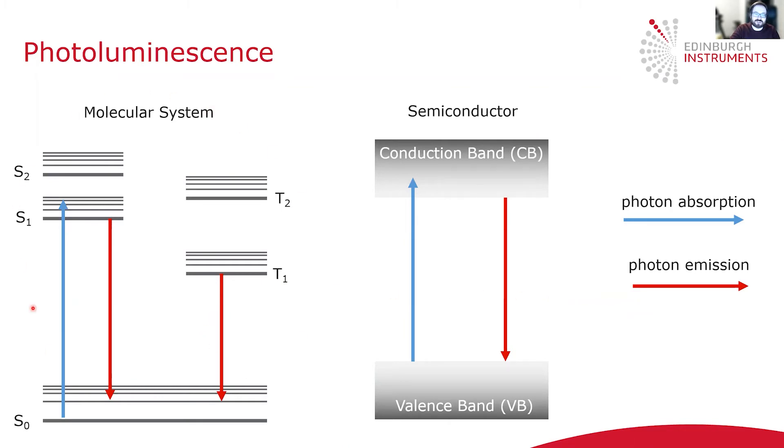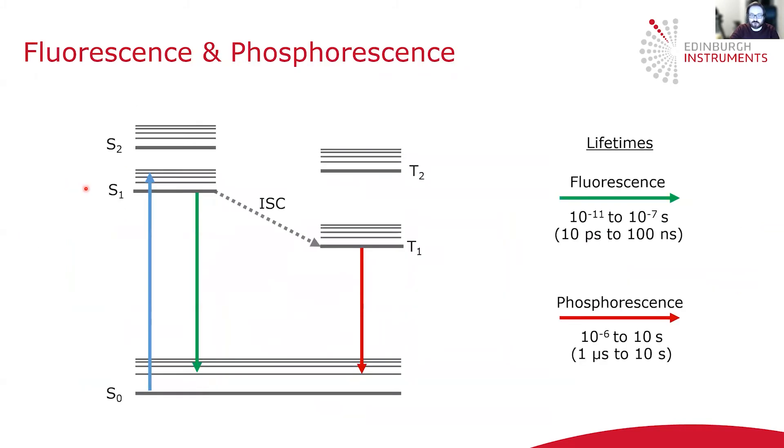In molecular systems that have distinct singlet and triplet levels marked T and S on this diagram, you can further subdivide photoluminescence into fluorescence and phosphorescence, depending on the origin of the state that the light comes from.